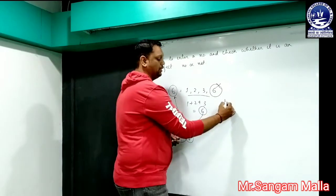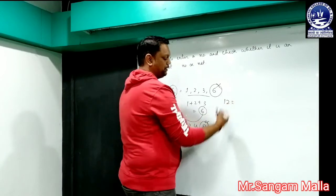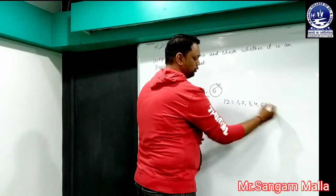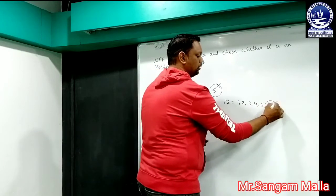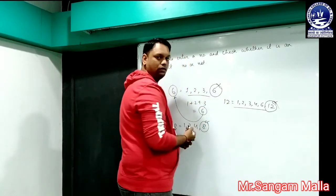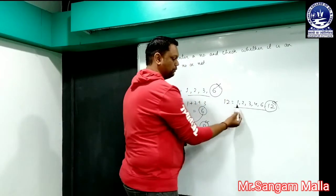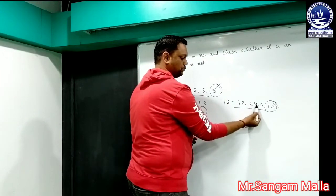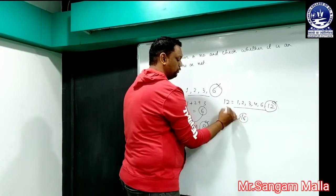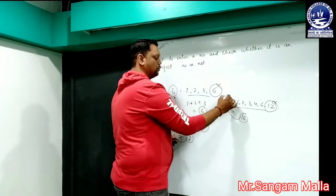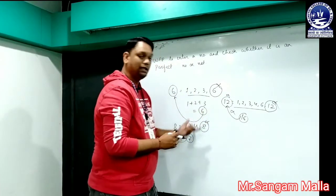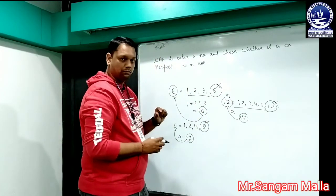Similarly, for the number 12, the factors are 1, 2, 3, 4, 6, and 12. Excluding 12 and adding the rest: 1+2=3, 3+3=6, 6+4=10, 10+6=16. So 16 ≠ 12, meaning 12 is not a perfect number. In this way, we calculate what is a perfect number.